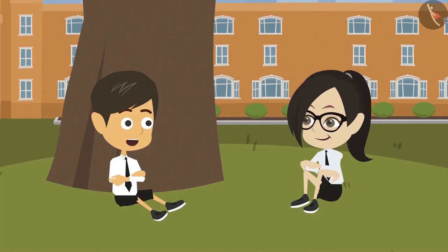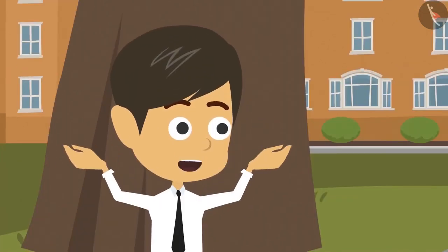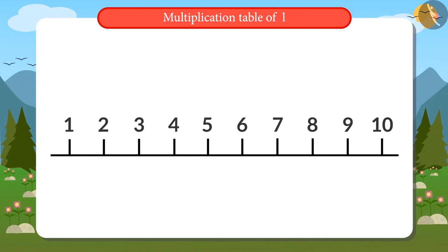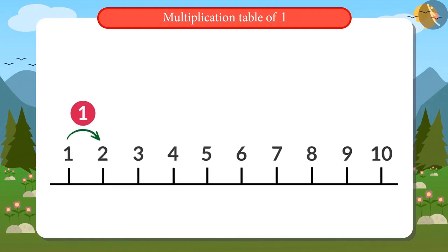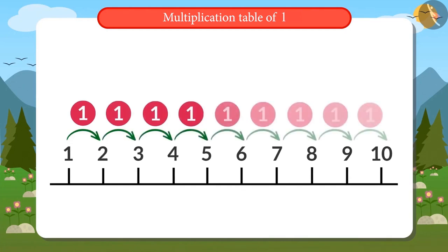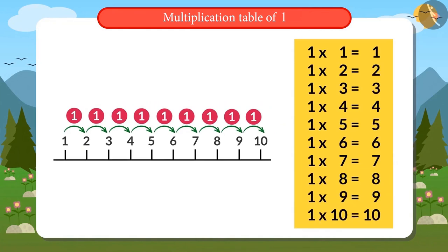There is a table of 1 as well and it is the easiest one. If we add 1 to any number on the number line, we get its succeeding number. This is the number line and I will read out the table of 1.